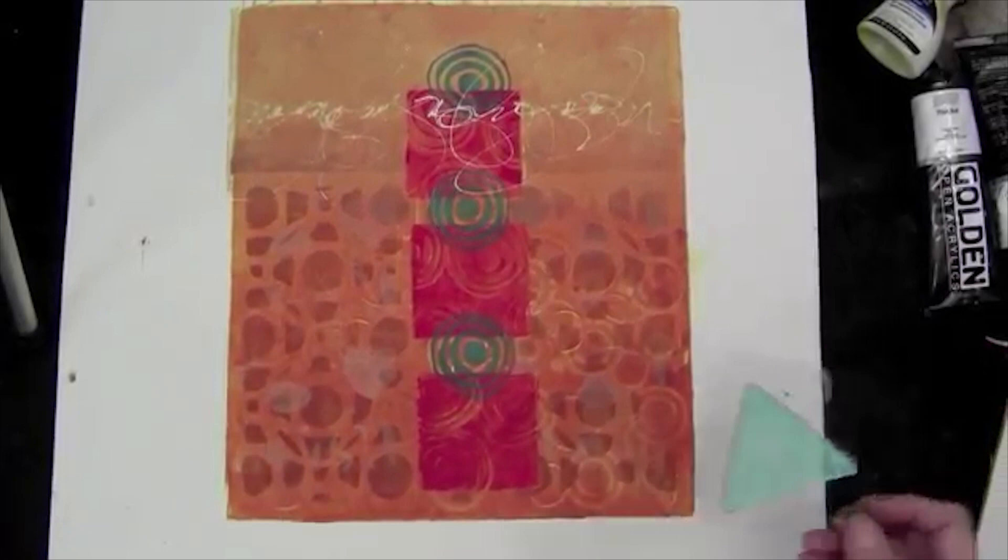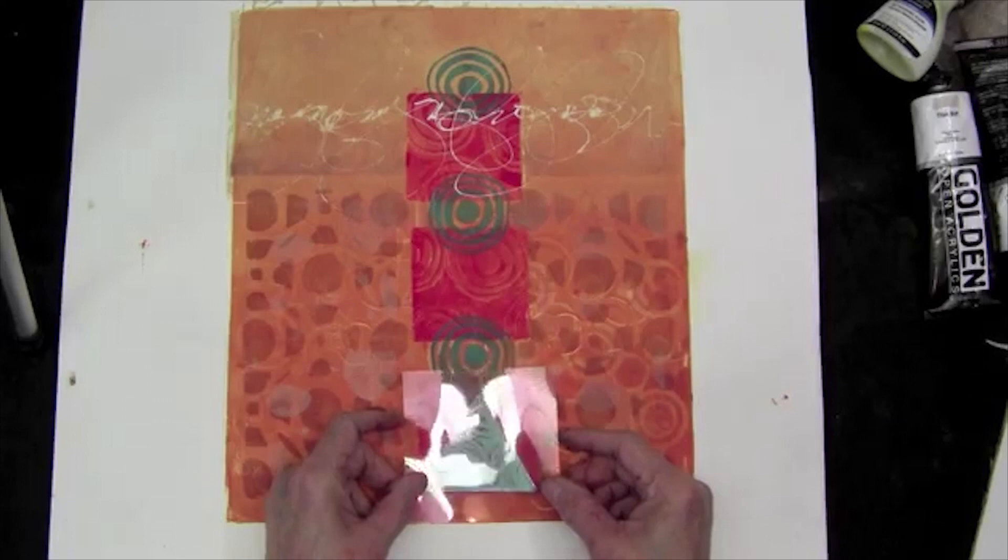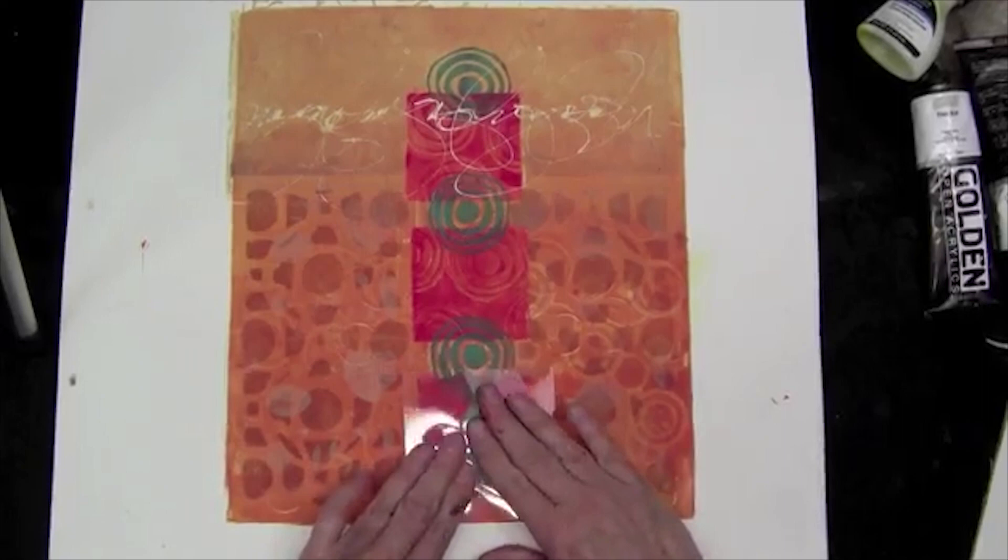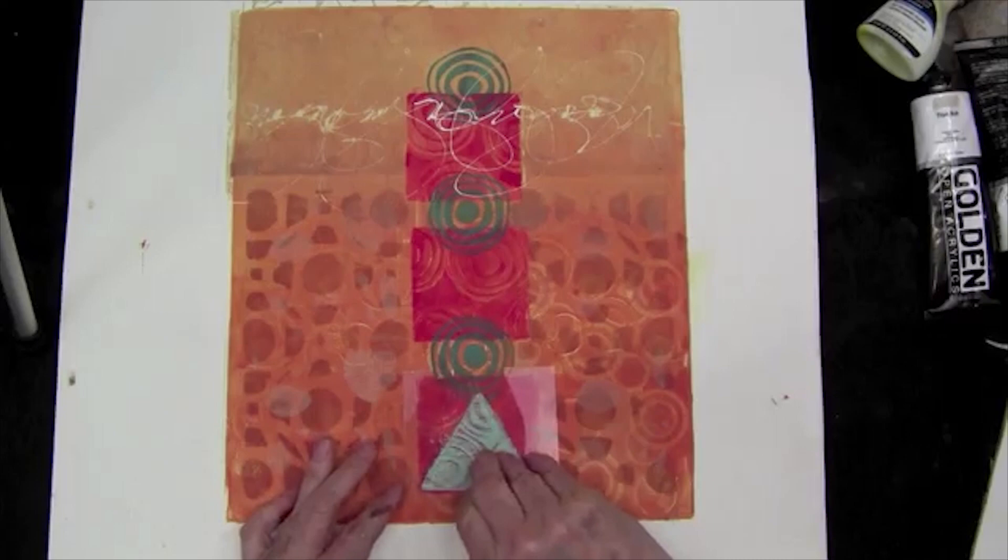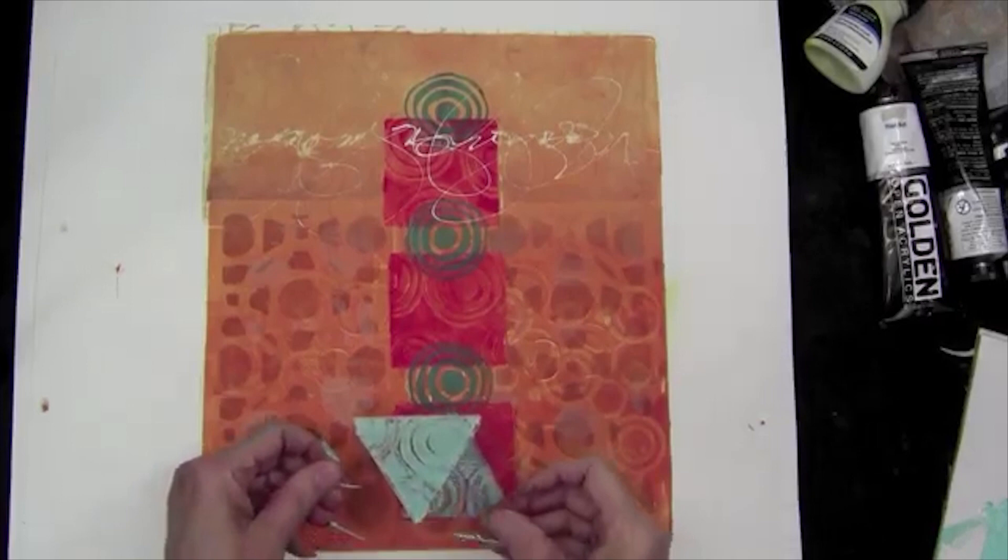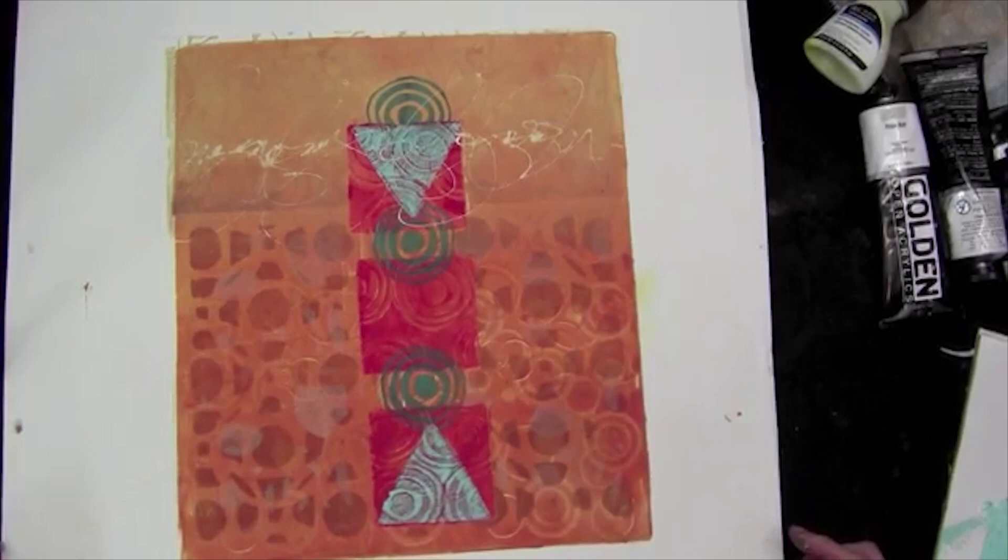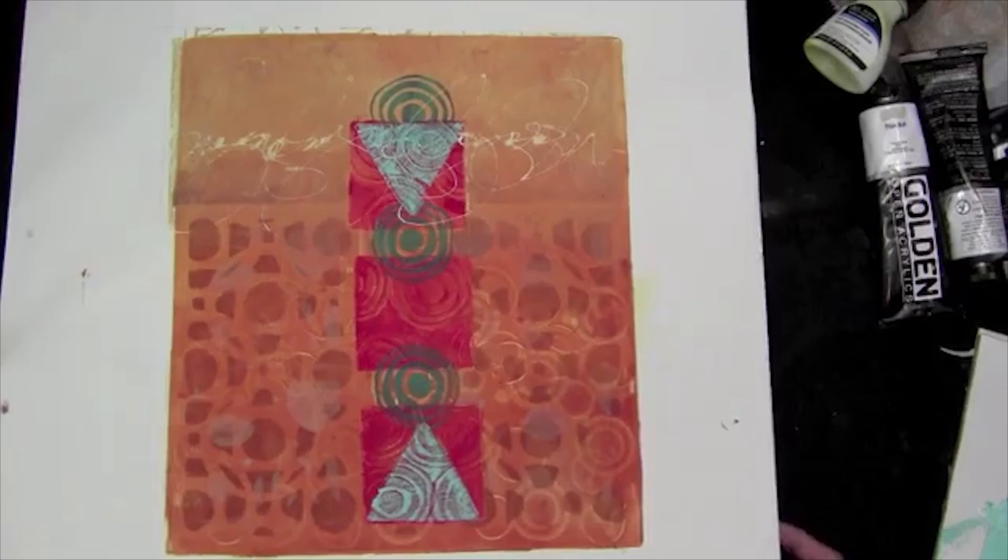I'm going to go back to my big print and I'm going to use this as a stamp, and I'm going to stamp it onto the square here. That worked, very cool. That makes me pretty happy. I'm going to set it aside and I'm going to go back to work on those collage elements that I started before.